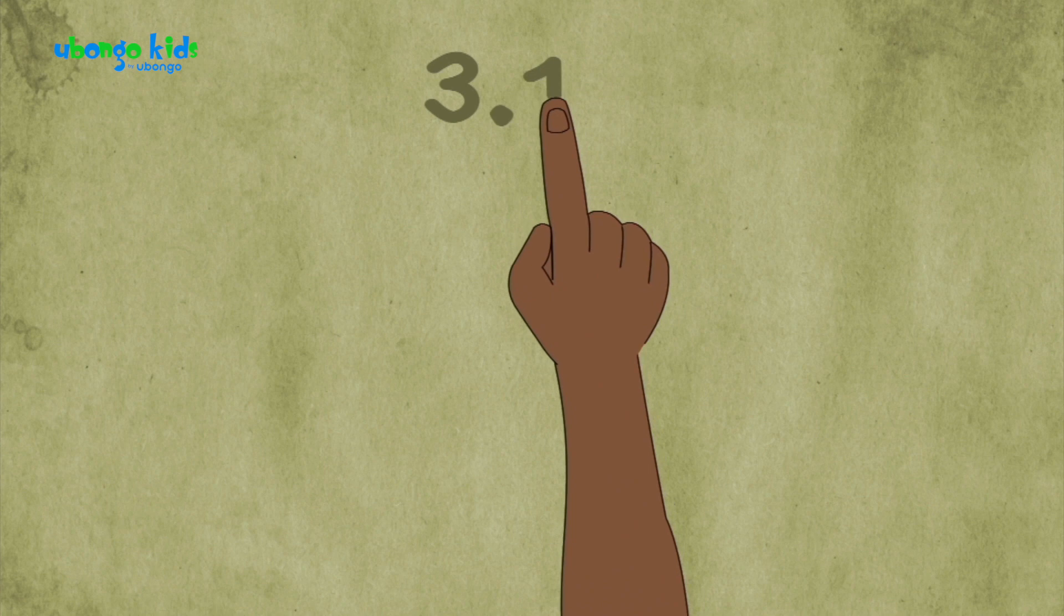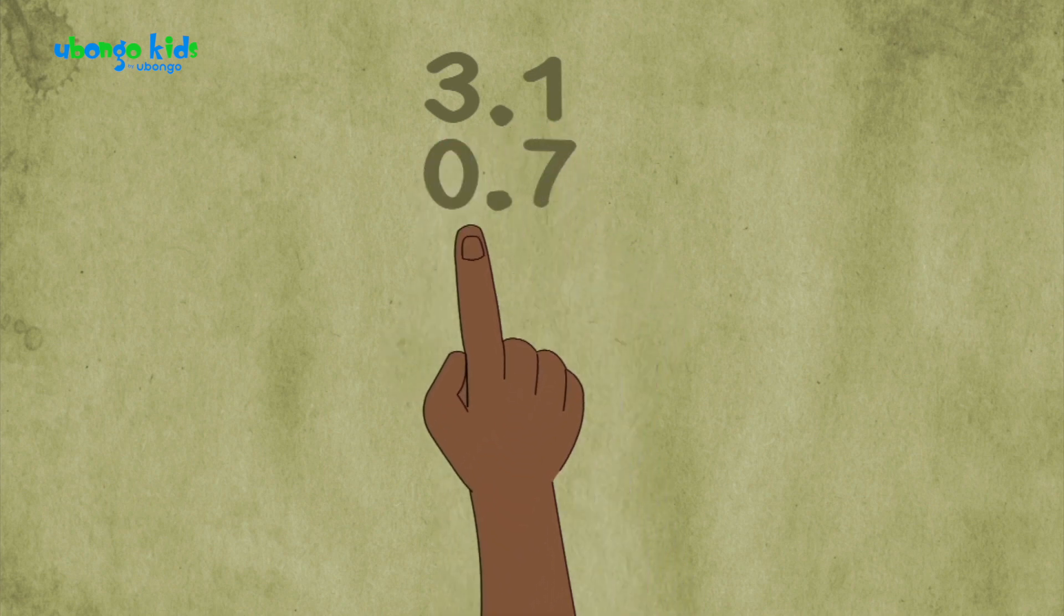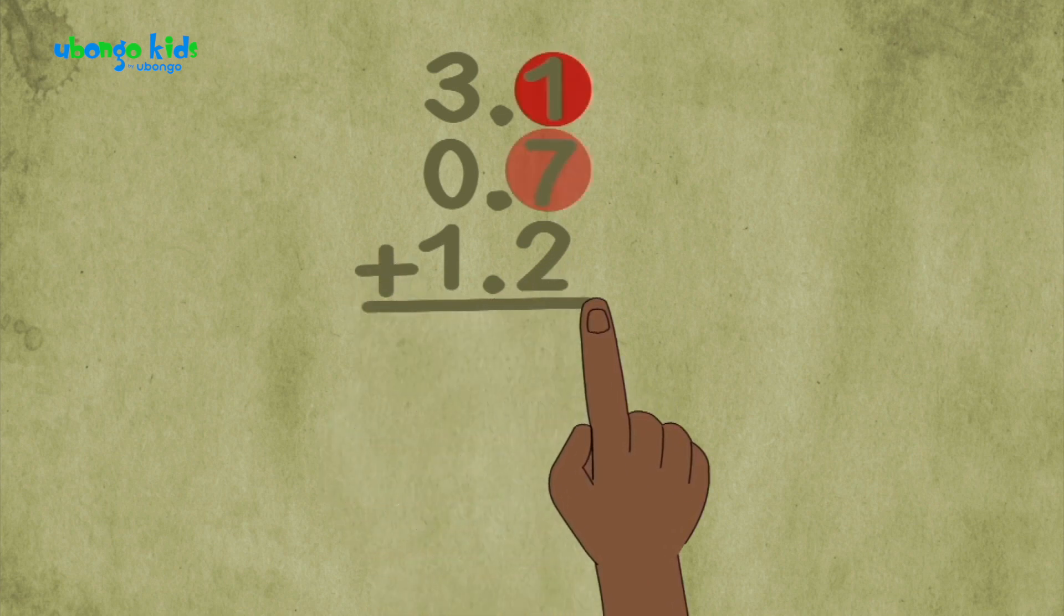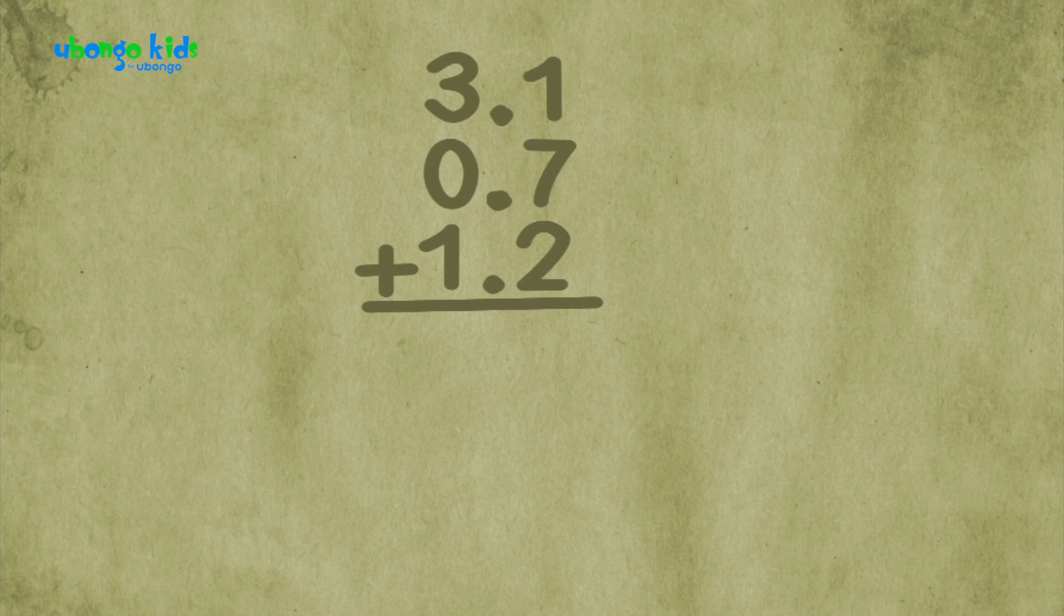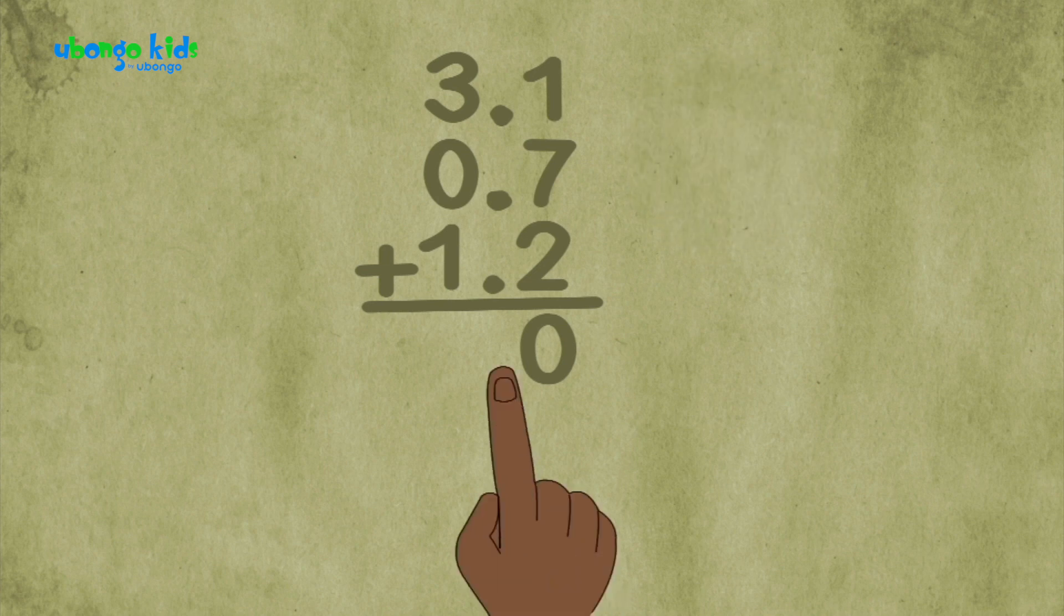Nice Kadoochi. So we take our 3.1 meters, then add 0.7 and 1.2. 1 plus 7 plus 2 is 10, so I write 0 and carry the 1 over. 1 plus 3 plus 0 plus the 1 that we carried over is 5.